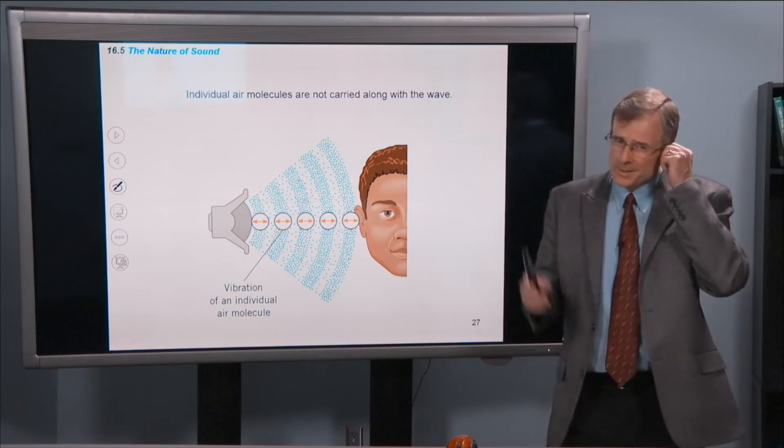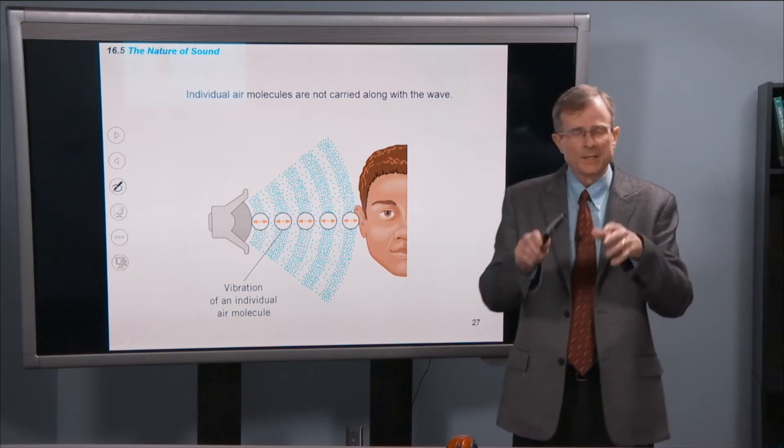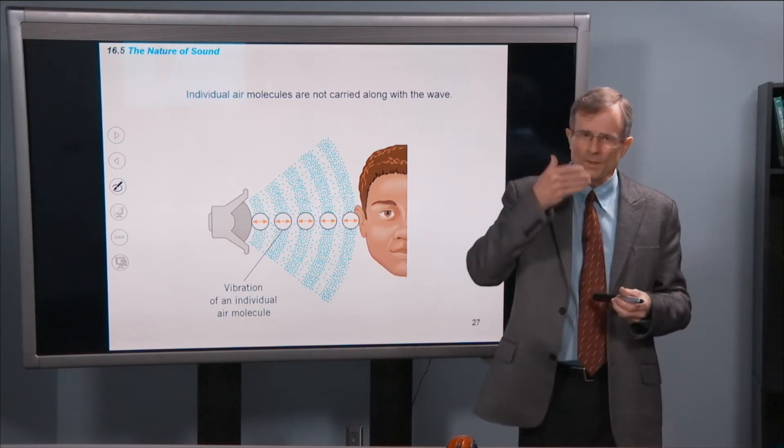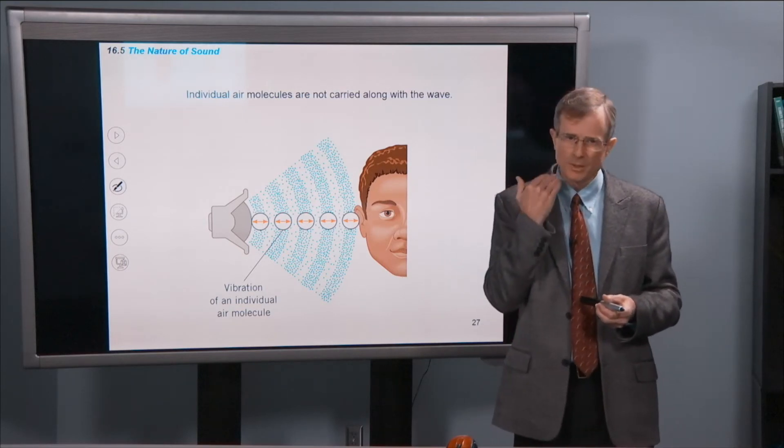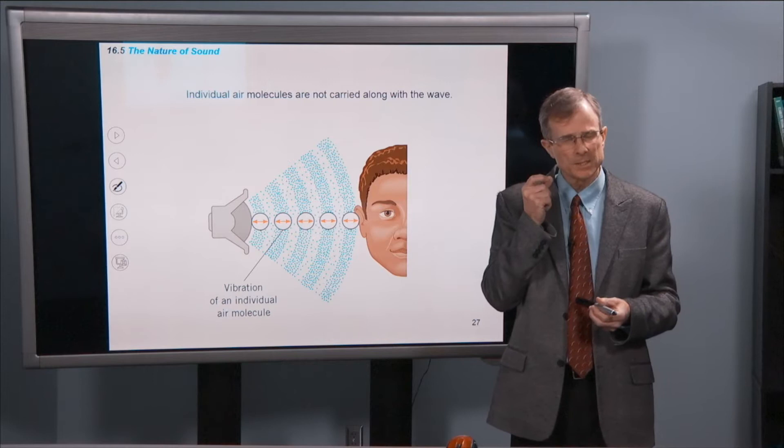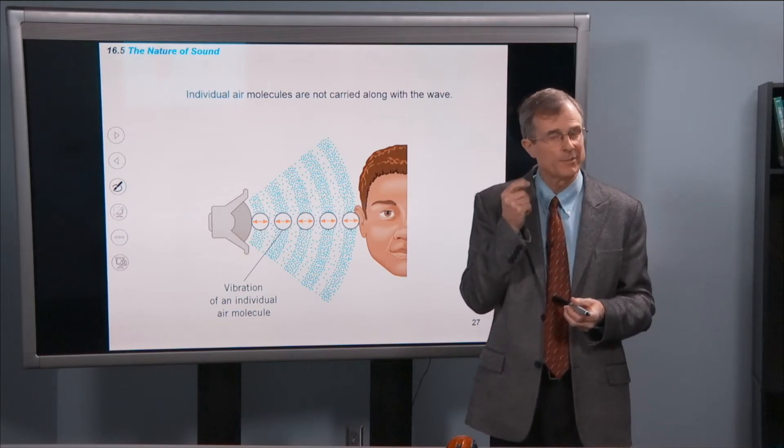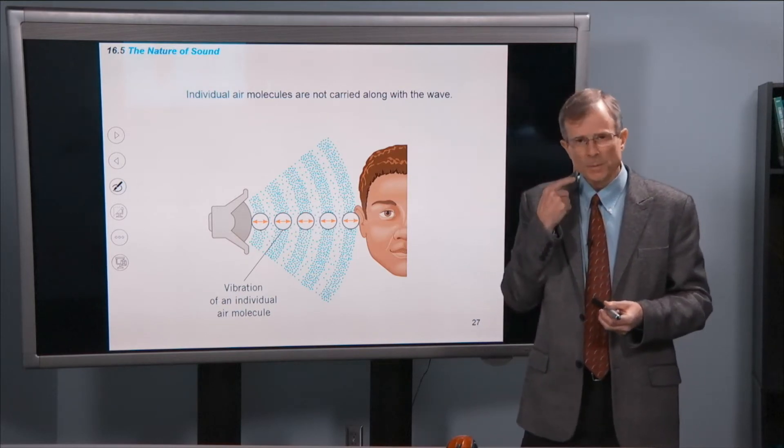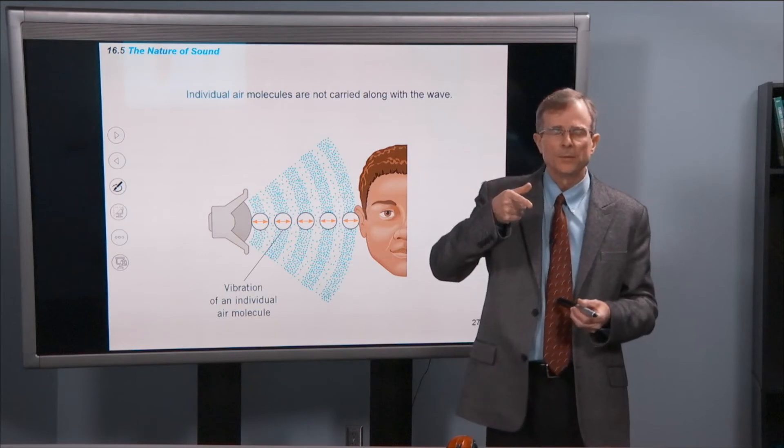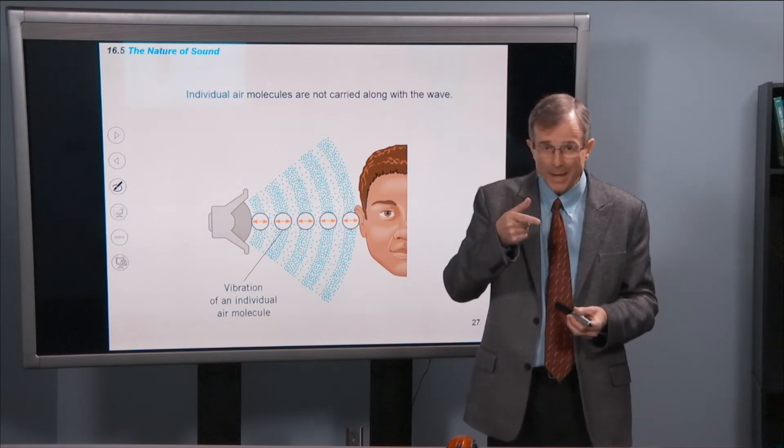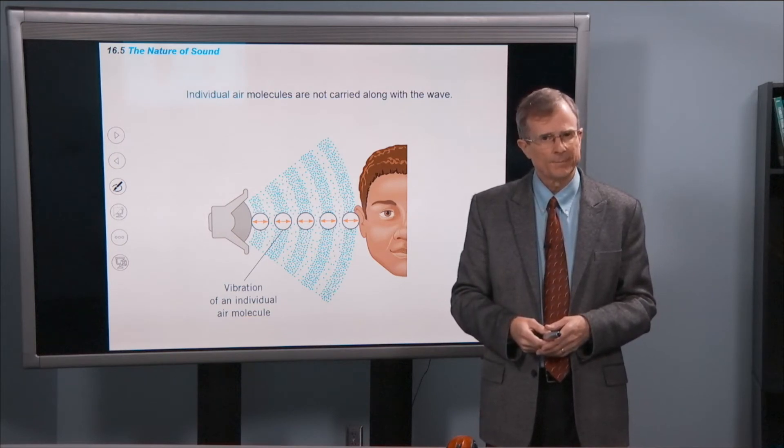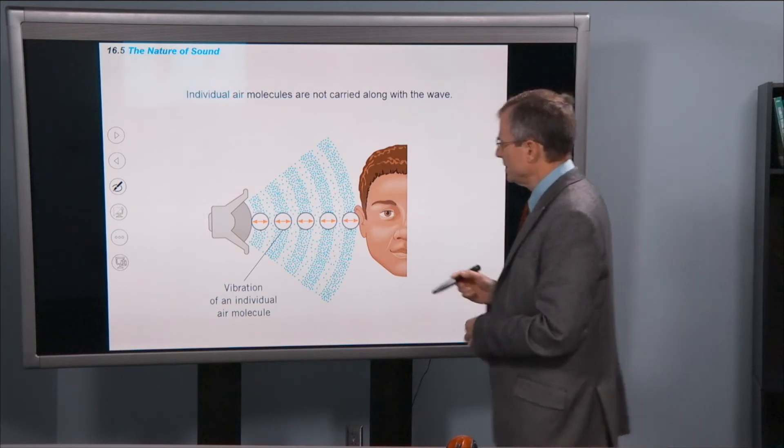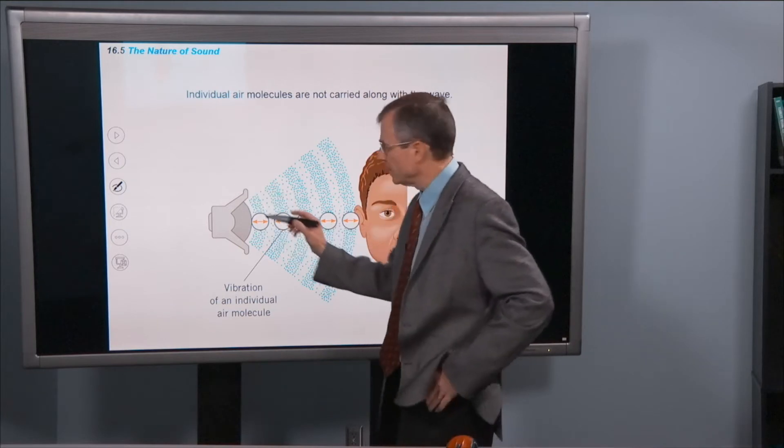So this is a very important point. As I'm speaking to the camera here, my voice, the vocal cords in my voice, are vibrating back and forth, which are causing the molecules near my vocal cords to vibrate. Do those molecules exit through my mouth and travel all the way to the camera? The answer is no. What happens is that, and here's the case of a speaker,